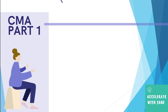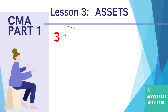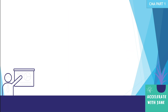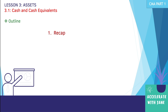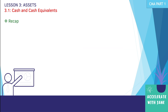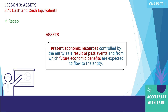In this video we're going to cover Lesson 3: Assets, and Section 1 is about cash and cash equivalents. For the outline of this lesson, first let's have a recap about assets, second let's recall the current and non-current classification of assets, and then I'll discuss the definition of cash as well as some examples, and third the definition of cash equivalents and also some examples.